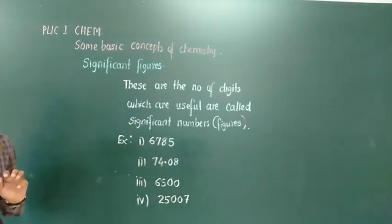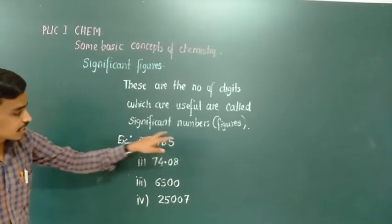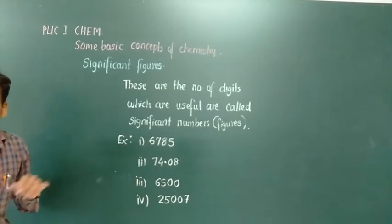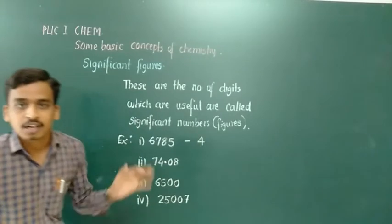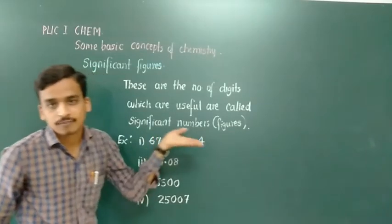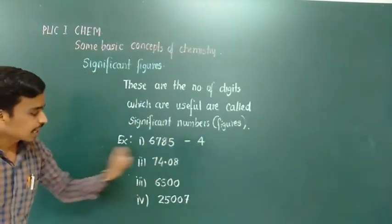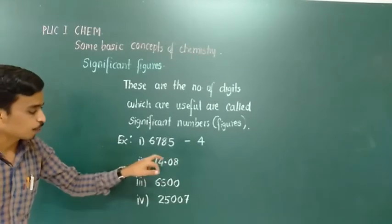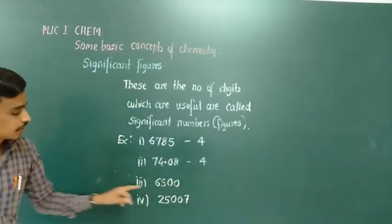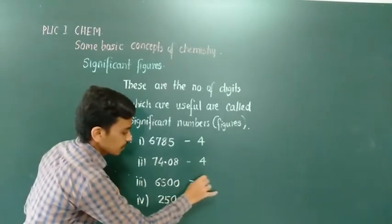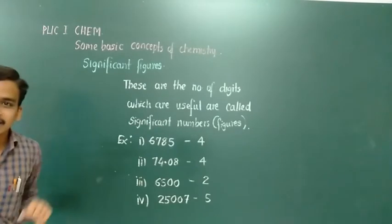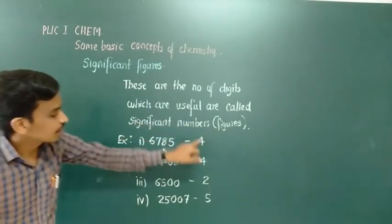First, consider the number 6785. It has 4 digits total and all 4 are useful, so all 4 are significant. Therefore the total number of significant figures is 4. Similarly, for 74.08, the significant number is 4. For 6500, the significant number is 2. I will write these significant numbers directly and then explain how to identify them using rules.